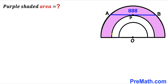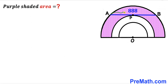Welcome to PreMath. In this video we have got three concentric semicircles with a common center O as you can see in this diagram. This AB is the chord of the big semicircle, and this chord AB is tangent to the medium semicircle. Moreover, this AB chord is 888 units long.